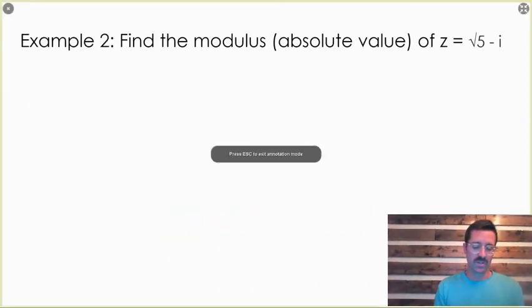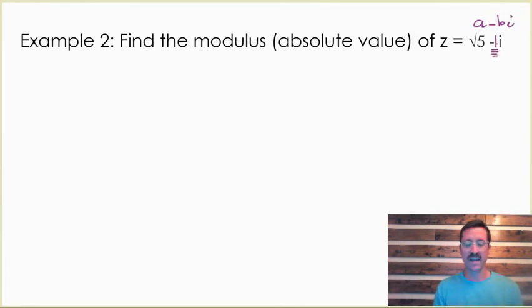Now let's do one more example. Here this one looks a little bit different because our a value has a square root, and then we have -bi, that just means our b value is going to be negative one, since i does not have a coefficient right there.